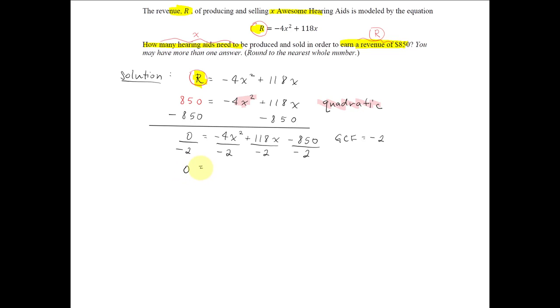In doing this, you can see that this reduces our coefficients of each term. We get positive 2x squared minus 59x plus 425. Now these coefficients traditionally are a little bit larger, but that's because we're dealing with a product like hearing aids.